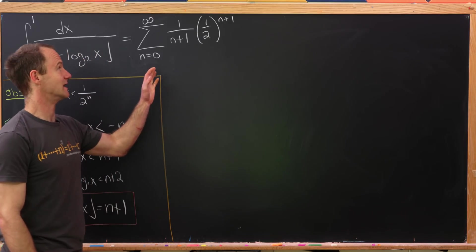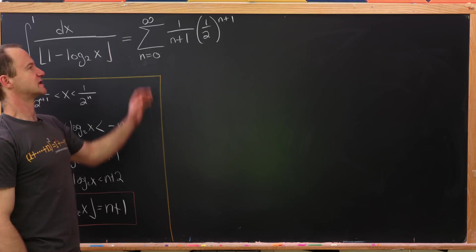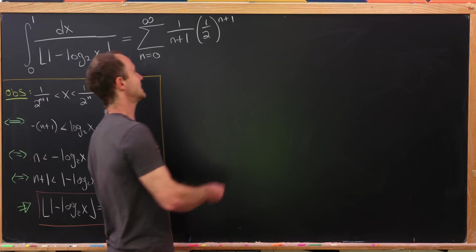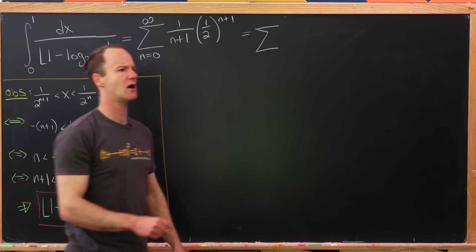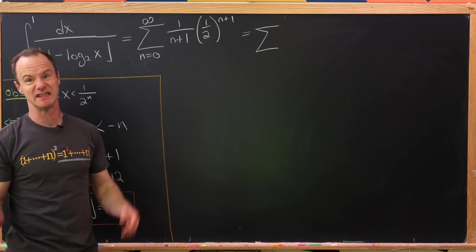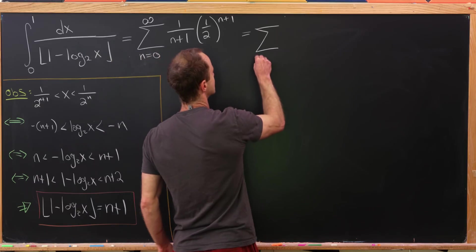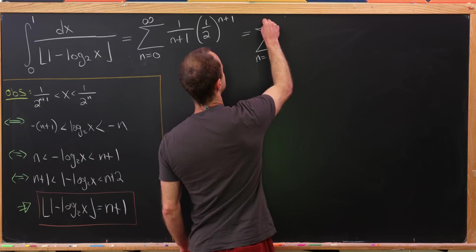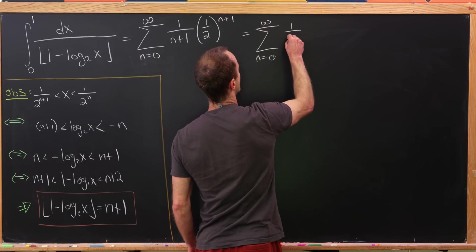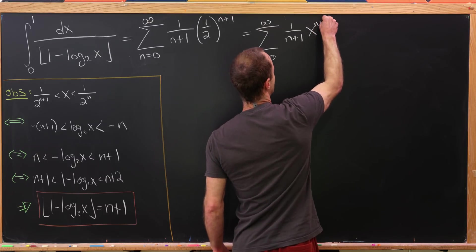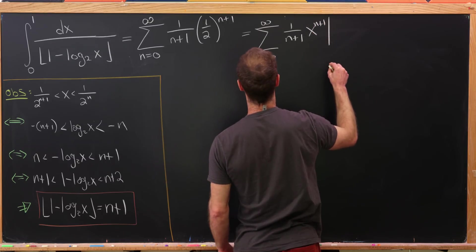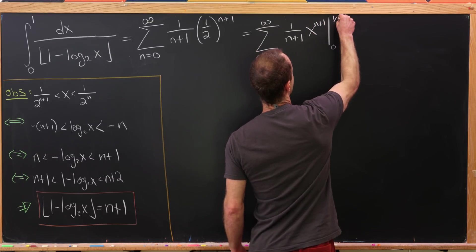So this is where we just ended. So our integral was the following sum, but now I'm going to take this sum and rewrite it so that it looks like, well, I'll call it a sum of zeroth integrals. So this is going to be the sum as n goes from 0 to infinity of 1 over n plus 1 times x to the n plus 1 evaluated from 0 to 1 half. That's what I mean by a zeroth integral.